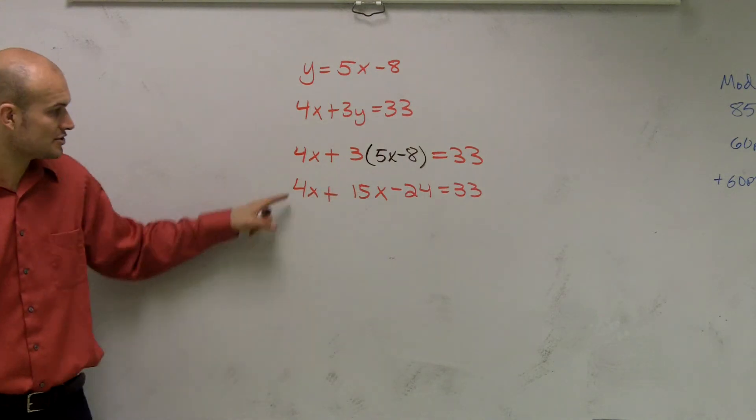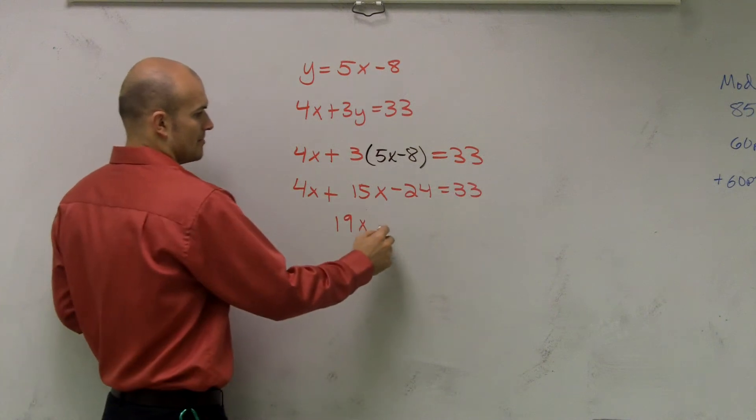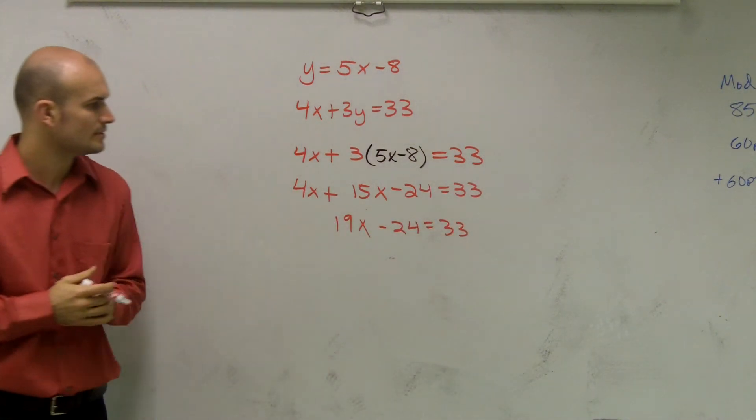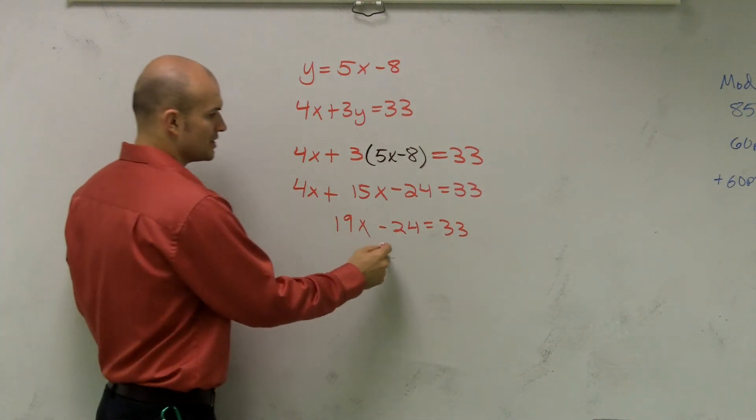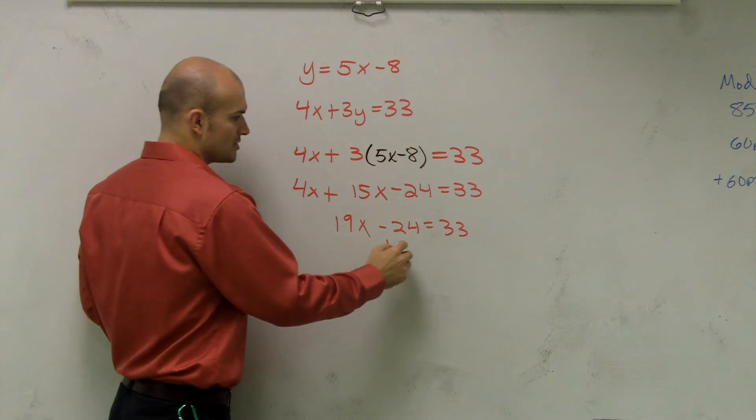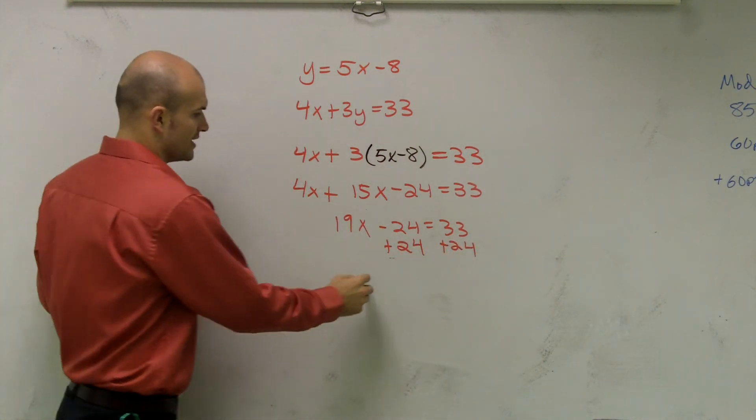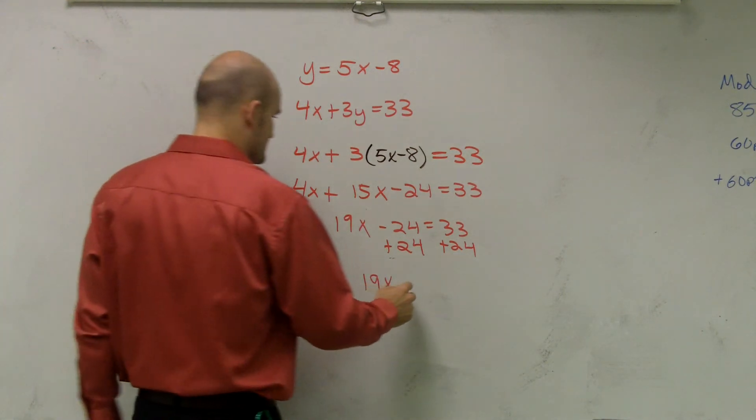Then I combine my like terms. 4x plus 15x is going to be 19x minus 24 equals 33. Then I'll add my 24 to the other side. Now I need to isolate my variable. So I'll add the 24 to the other side.